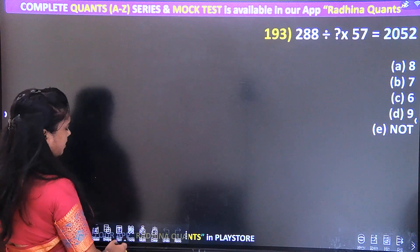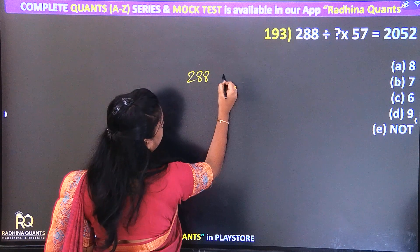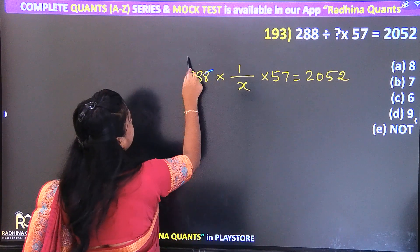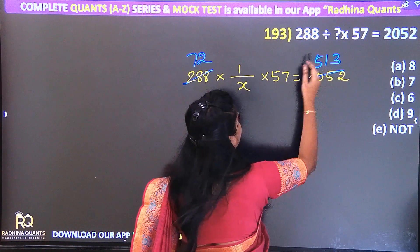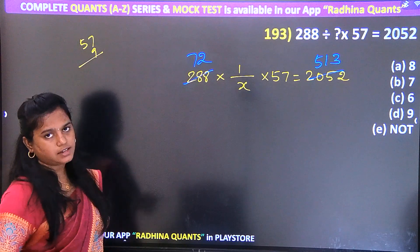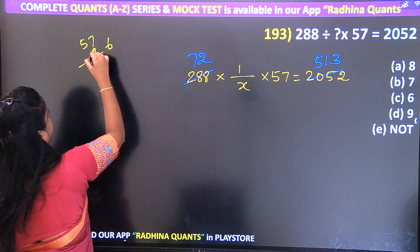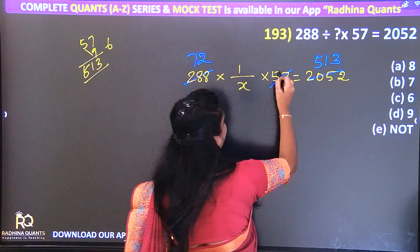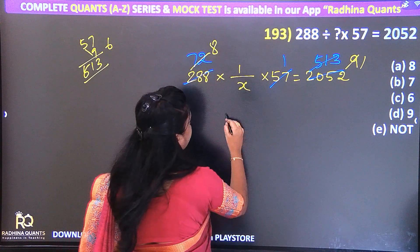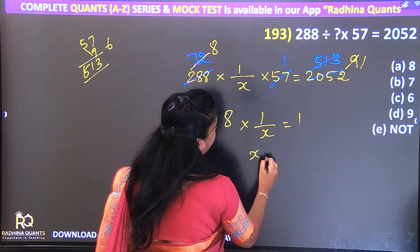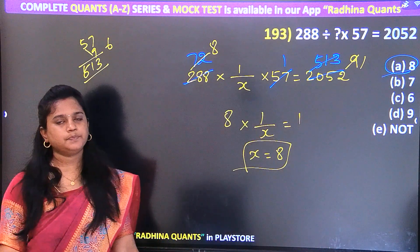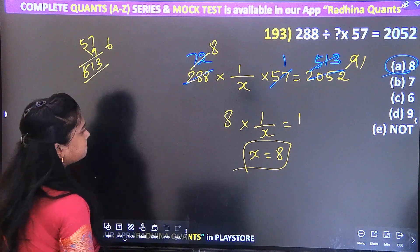Question 193: 288 divided by question mark, into 1/x, into 57 equals 2052. Cancel 4 times: 72. Then 5 × 1 × 3 = 57 × 9. So LHS has 8 × 1/x, RHS has 1, therefore x equals 8. Option A — 8 is the right answer.